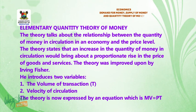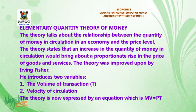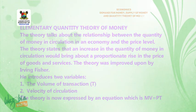The two variables are: the volume of transactions, which is T, and the velocity of circulation. The theory is now expressed by an equation: MV = PT.